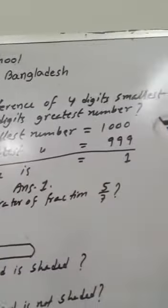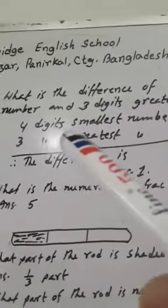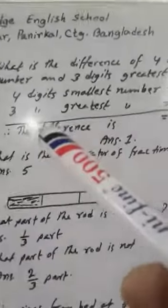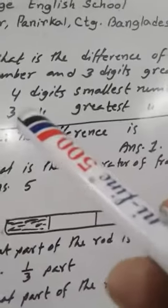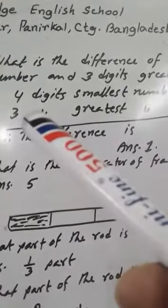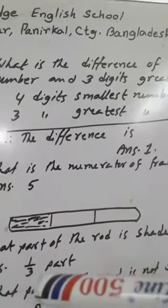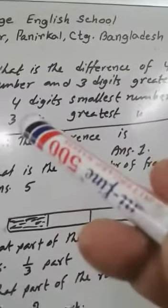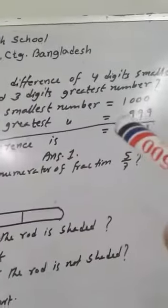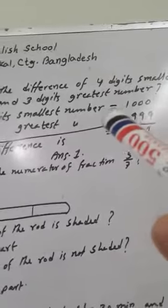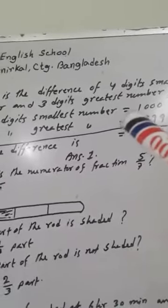What is the difference between the four-digit smallest number and the three-digit greatest number? We know the two-digit smallest number is 10, the three-digit smallest number is 100, and the four-digit smallest number is 1000 — one followed by three zeros.